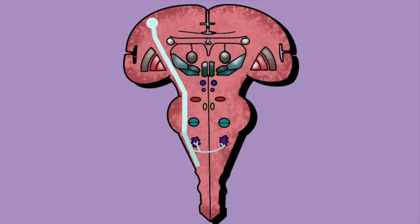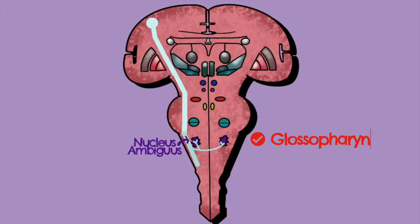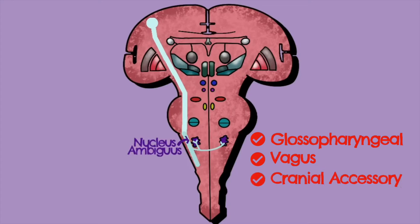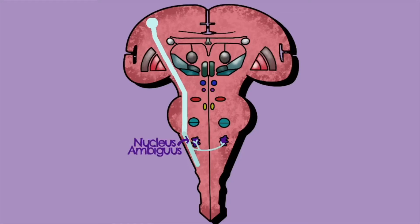Moving on into the medulla, we encounter a nucleus called nucleus ambiguus — with a rather unusual spelling. This corresponds to the nuclei of the glossopharyngeal nerve, the vagus nerve, and the cranial accessory. The cranial accessory is no longer considered a separate nerve and tends to be merged with vagal functions, but nucleus ambiguus is responsible for all of those cranial nerves.